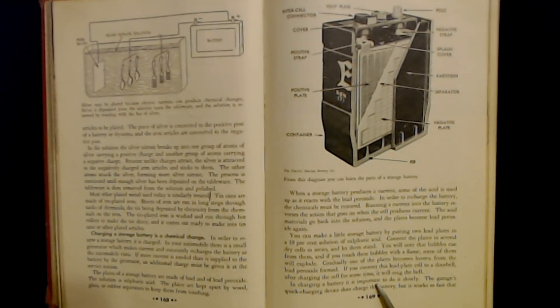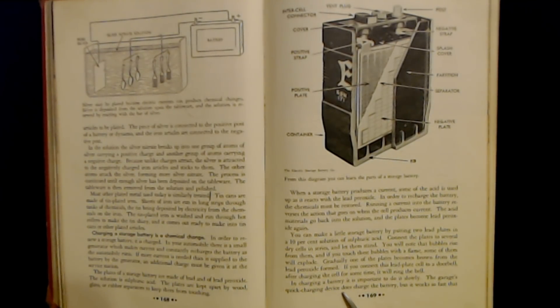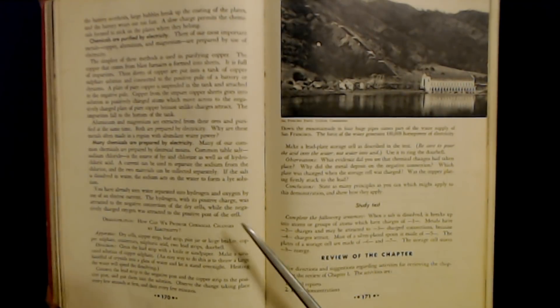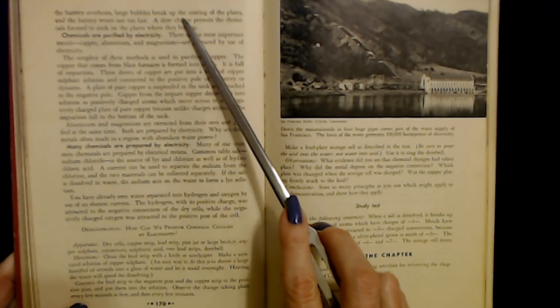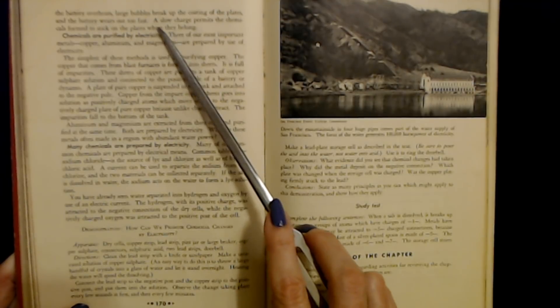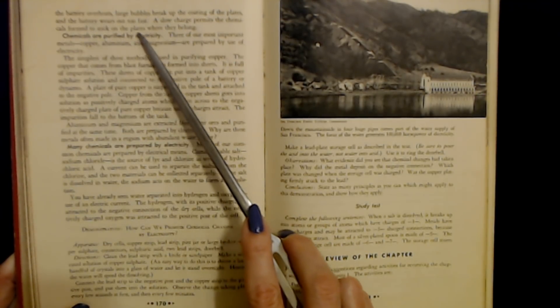In charging a battery, it is important to do it slowly. The garage's quick charging device does charge the battery, but it works so fast that the battery overheats. Large bubbles break up the coating of the plates and the battery wears out too fast. A slow charge permits the chemicals formed to stick on the plates where they belong.